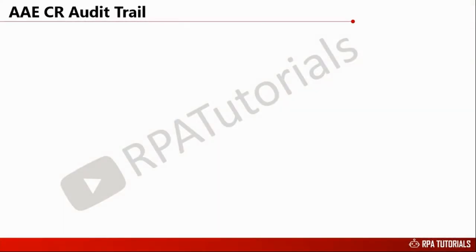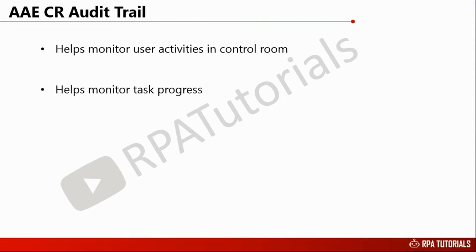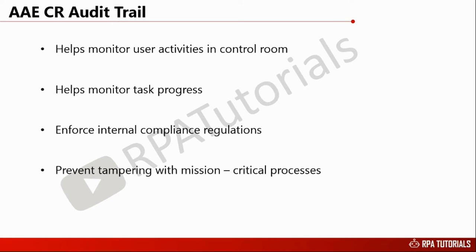The audit trail section of the control room helps administrators monitor user activities in the control room. It also provides a view into task execution progress. The audit trail section will be visible to all users whose roles have been granted permissions to access it. Organizations can utilize this data to enforce internal compliance regulations, and it also helps prevent tampering of mission critical processes or scripts stored in the server repository.